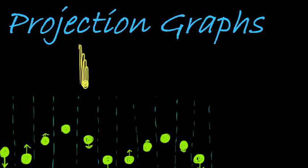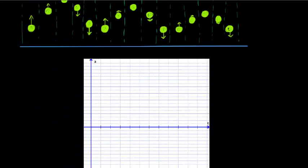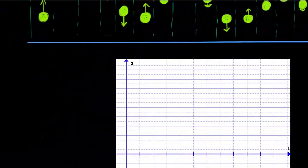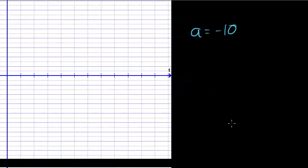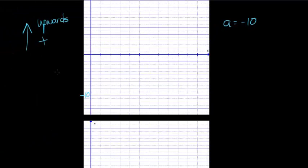Now as that happens, what's happening to velocity, what's happening to displacement, what's happening to acceleration? Well, of course acceleration stays a beautiful constant negative 10. So wherever, and now obviously we're assuming that upwards is positive, upwards is positive, which means that acceleration will be a constant negative 10.